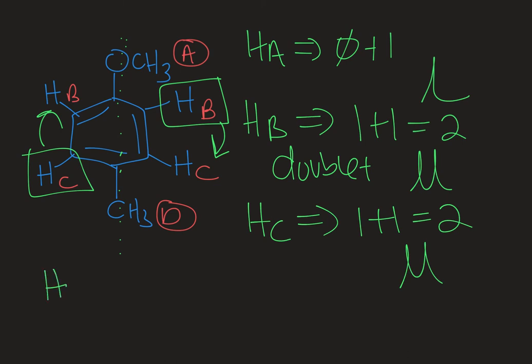Lastly, HD also has no neighbors — the next-door neighbor carbon to HD has four bonds but no Hs on it. So zero plus 1 equals 1, giving a singlet. Looking at our predicted splitting patterns, we have two singlets and two doublets. We also have two CH3 groups with three protons each, and two different types of protons on our benzene ring.